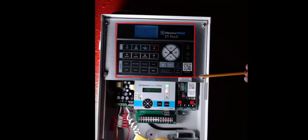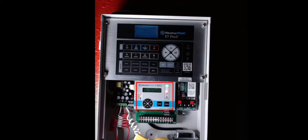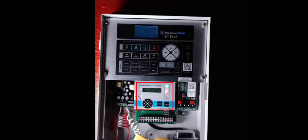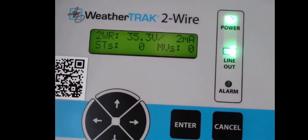Below the WeatherTrack interface we have the WeatherTrack 2-Wire interface, which manages turning stations on and off in the field. All scheduling information is run by the WeatherTrack interface, and the 2-Wire interface only reports on valve function and electrical conditions in the field. So the first step in troubleshooting 2-Wire is making sure that what we are looking at is actually a 2-Wire issue, and not a WeatherTrack issue like program alerts or communication alerts.